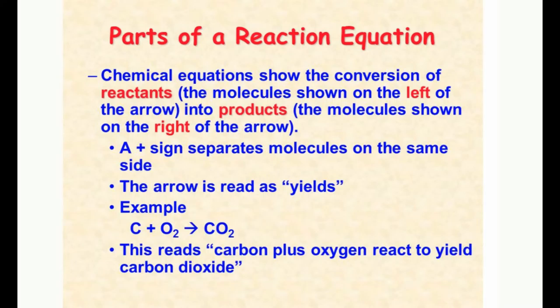Breakdown of the arrow: 'to yield' basically means 'to produce,' 'to form,' or 'to decompose' — but you only see 'to decompose' in decomposition reactions. Be sure you know the difference between what's on the left and what's on the right. The plus sign separates compounds, and so does the arrow.